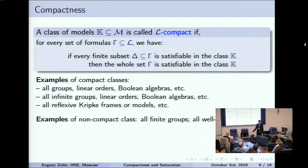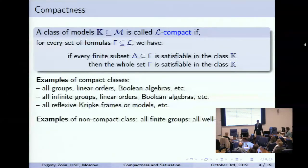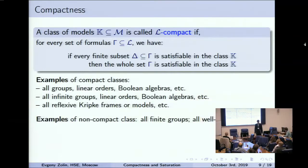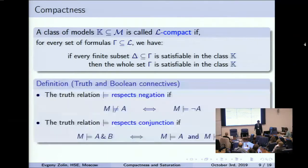Examples of compact classes are well known. In fact, here I listed all axiomatizable classes. Everything that is listed here is axiomatizable, and this is not a coincidence — this is just a general fact.